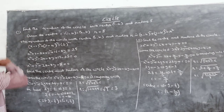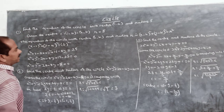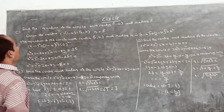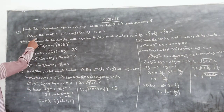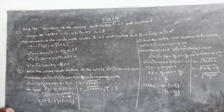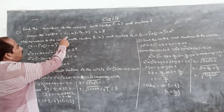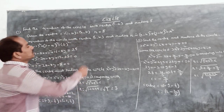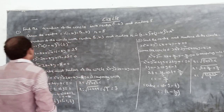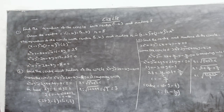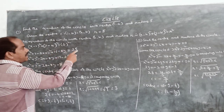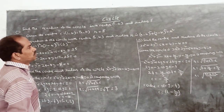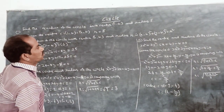Problem: Find the equation of the circle with center (1, 4) and radius 5. Given the center c is equal to (1, 4), that is equal to (h, k), and the radius r is equal to 5. The equation of the circle with center (h, k) and radius r is: x minus h whole square plus y minus k whole square is equal to r square.